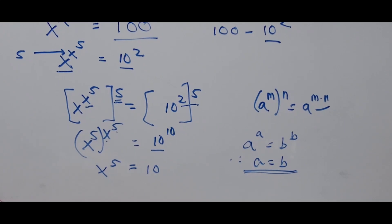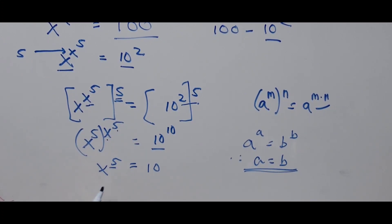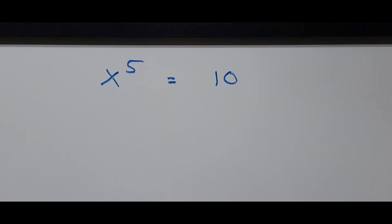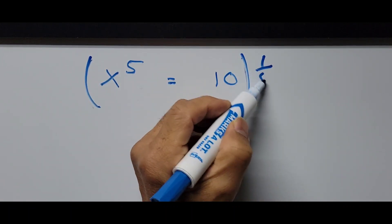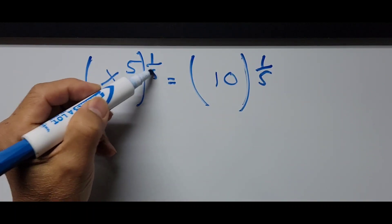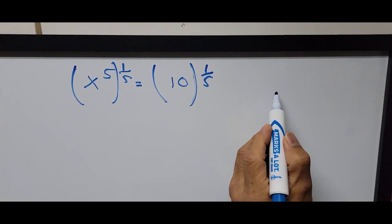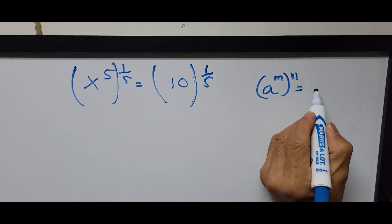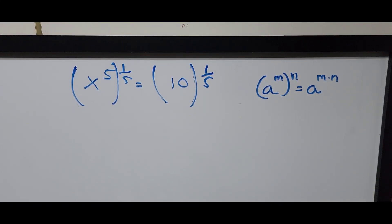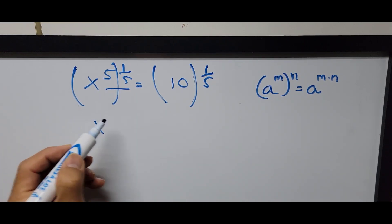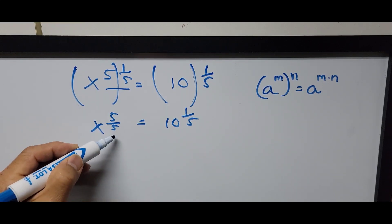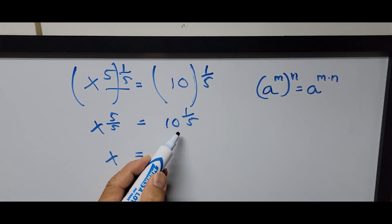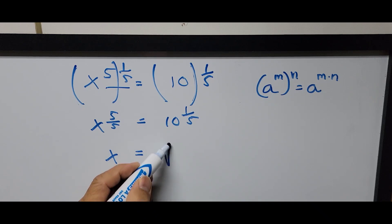To find the value of x, we raise both sides to the reciprocal power of 5. The reciprocal of 5 is 1 over 5, so we raise both sides to the power of 1 fifth. Using the exponent rule a raised to m raised to n equals a raised to m times n, the left side becomes x raised to 5 divided by 5, and the right side is 10 raised to 1 fifth. Since 5 divided by 5 is 1, this gives x equals 10 to the 1 fifth power — the same as the fifth root of 10.